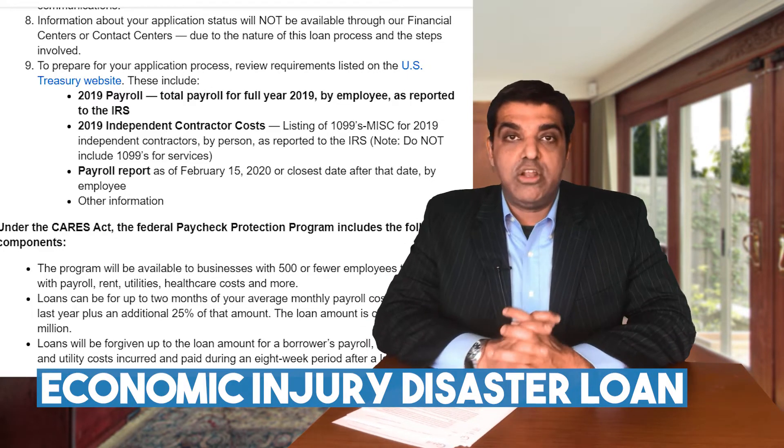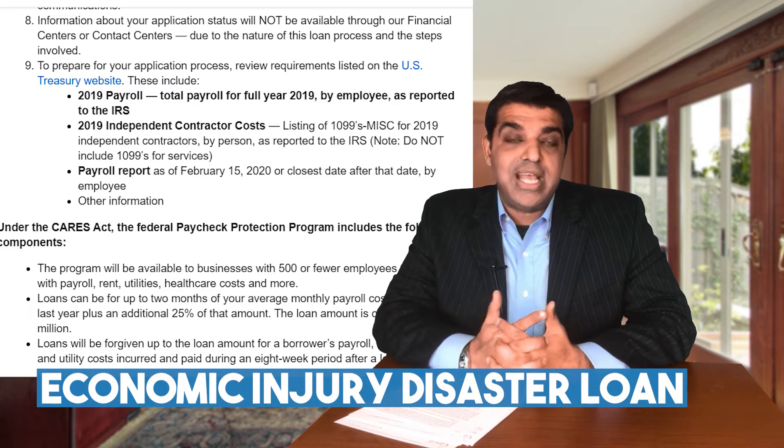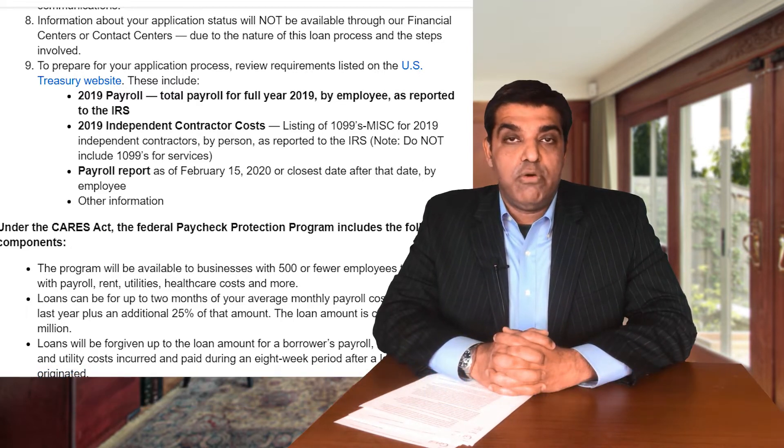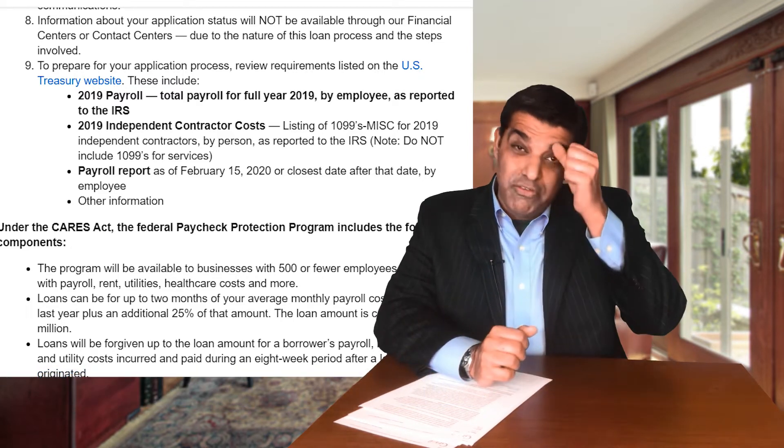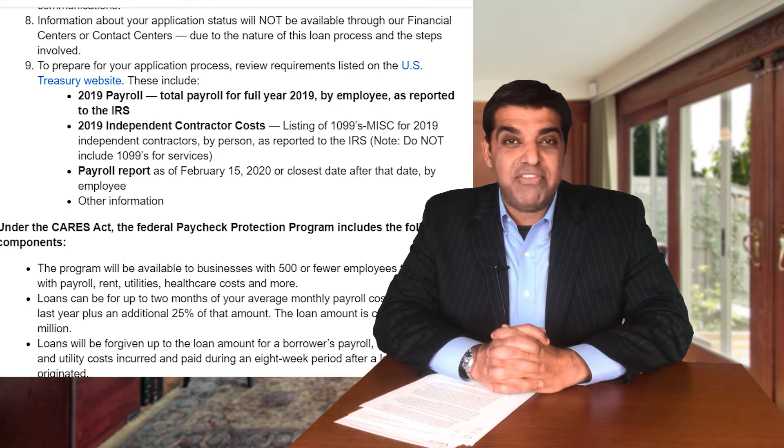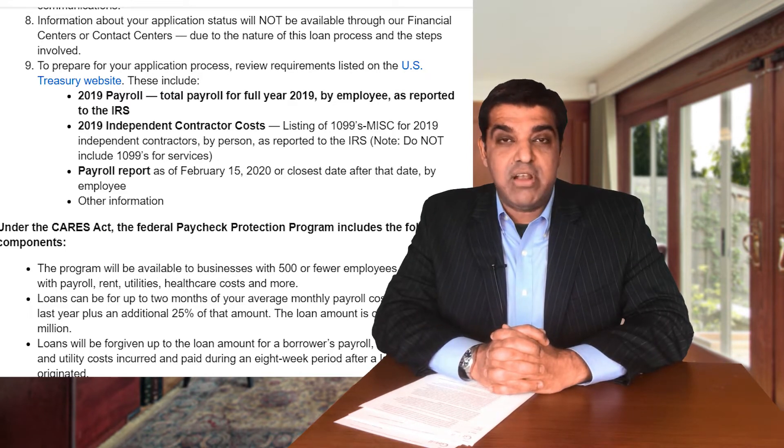The Economic Injury Disaster Loan is directly through the Small Business Administration. If you have questions about the EIDL, good luck getting through to the SBA on the phone — you'll be on hold for at least half an hour, probably several hours. When I called today, they basically said as long as you have an application number, there's nothing else they can tell you — just wait to get an email from them.